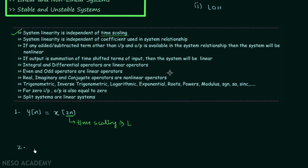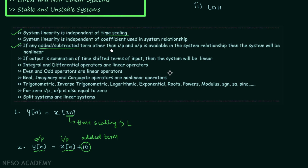In example number 2, y(n) is equal to x(n) + 10. In this relationship we have the output term y(n), the input term x(n), and also one added term. If you look at conclusion number 3, it states that if any added or subtracted term other than input and output is available in the system relationship, then the system will be non-linear. Therefore this system is non-linear.